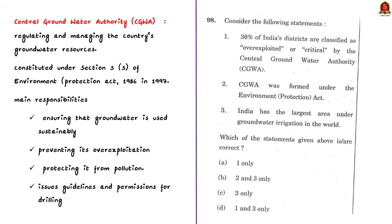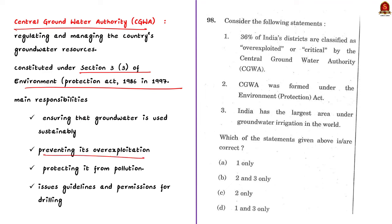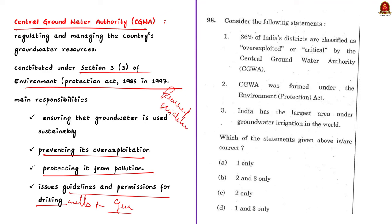The Central Groundwater Authority (CGWA) is tasked with regulating and managing the country's groundwater resources. It has been constituted under Section 3 of the Environment Protection Act 1986. Its main responsibilities include ensuring sustainable groundwater use, preventing over-exploitation, and protecting it from pollution. The CGWA issues guidelines and permissions for drilling wells and extracting groundwater, especially in areas where water levels are critically low. In March 2024, the National Green Tribunal expressed dissatisfaction over CGWA's response to the widespread issue of toxic arsenic and fluoride in groundwater across India.